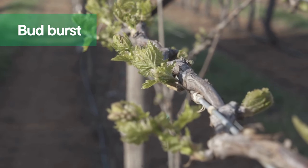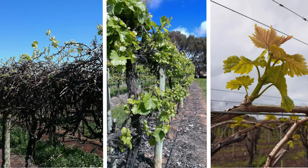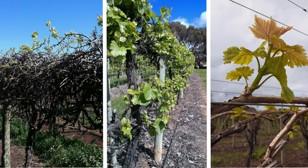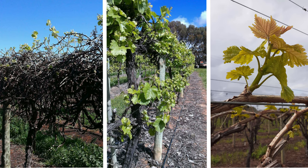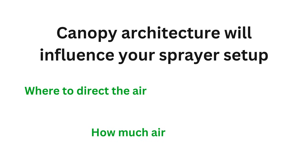At Bud Burst we've got a really tiny target canopy. Those bursting buds might be spread across a large area on a minimally pruned vine or high on two vertical cordons, or it might be a very very narrow area along a rolled down cane. Canopy architecture, whatever it is, is going to influence your machinery setup — where you should direct the air, how much air, which nozzles you're using.